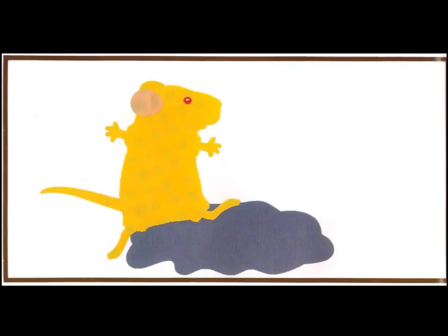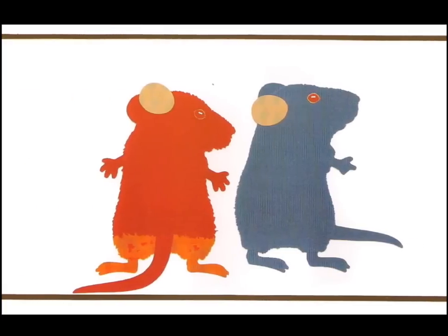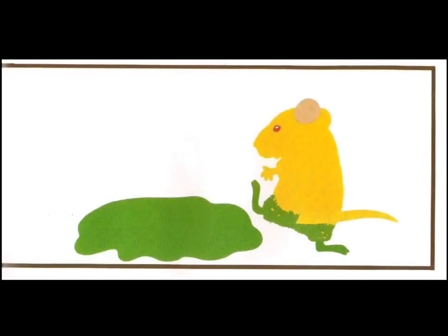The yellow mouse hopped into a blue puddle. His feet mixed and stirred and stirred and mixed until... Look down! said the red mouse and the blue mouse. Yellow feet in a blue puddle make green.